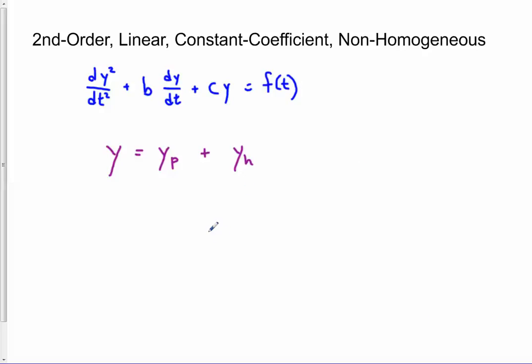And our approach is to use linearity. The general solution will be the sum of the general solution to the corresponding homogeneous differential equation, basically this with a zero on the right, and we talked about how to get that. And then we're going to add to that a particular solution to the non-homogeneous one. We just have to find one particular solution regardless of initial conditions.